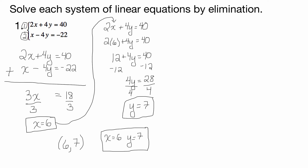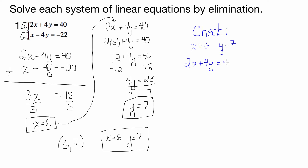We're not done yet — we have to check our work. In real life you need to check everything you do; we don't want to make a silly mistake. So, we got x equals 6, y equals 7. Plugging into equation 1: 2x plus 4y equals 40, so 2 times 6 plus 4 times 7. That's 12 plus 28. Does that equal 40? 12 plus 28 is 40. Yes — 40 equals 40. Perfect!